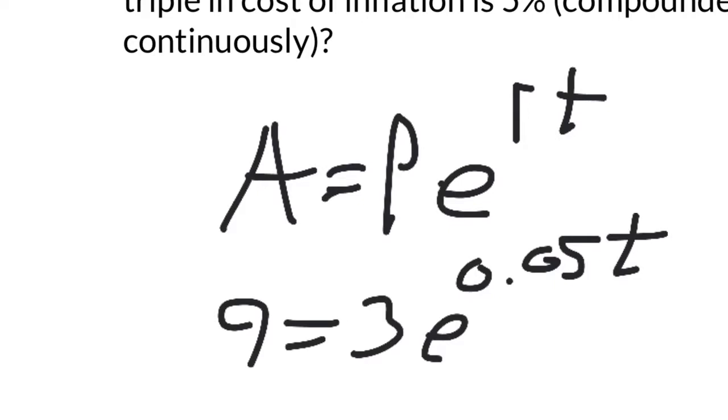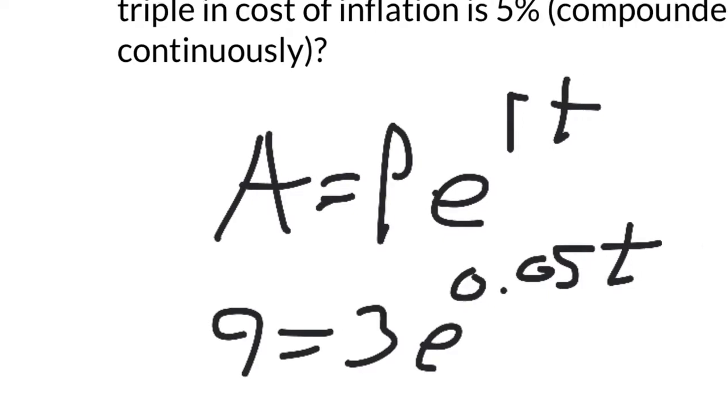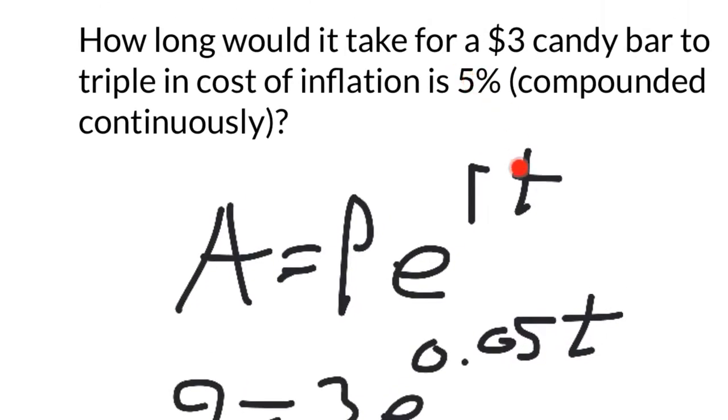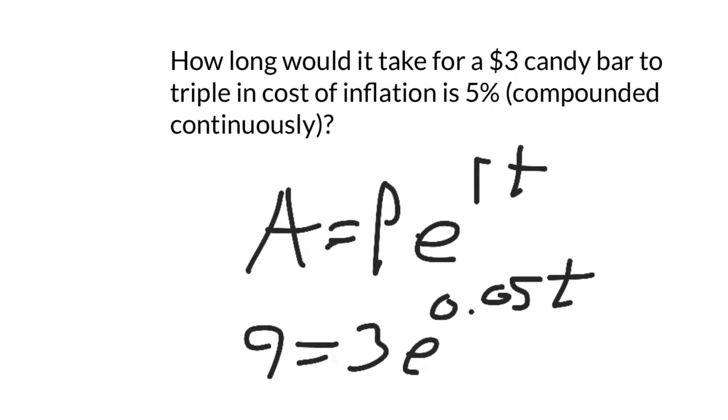That's what it looks like if you plug everything in. Just note that I used the decimal form of the percentage when I plugged it in for r. t is the thing I don't know. p is the starting amount, so I start with $3. I want to know how long it's going to take to triple.